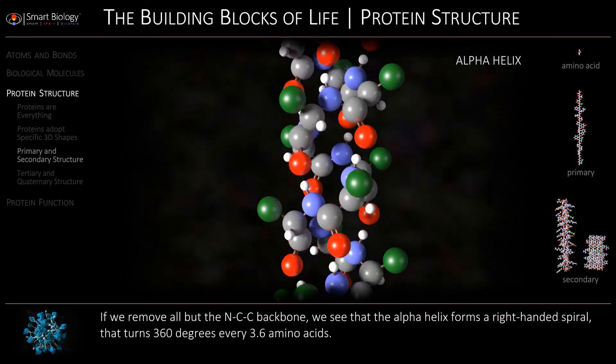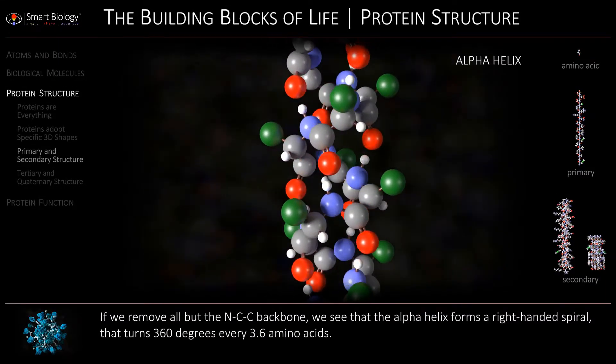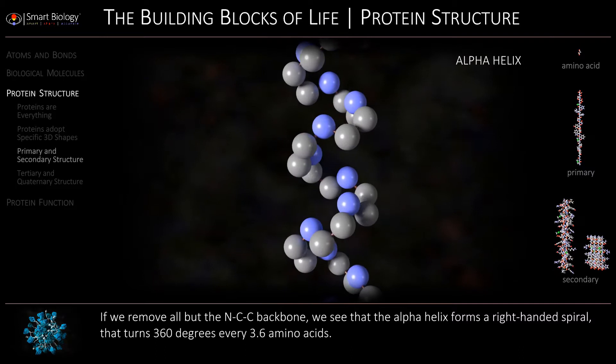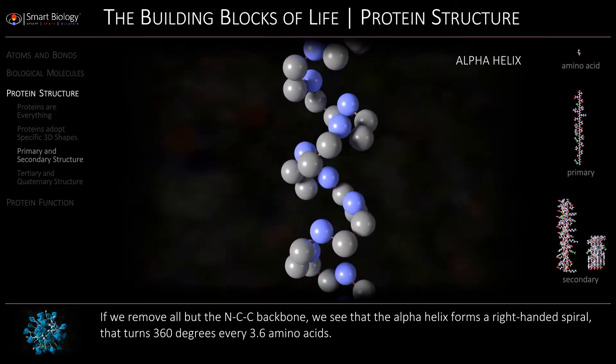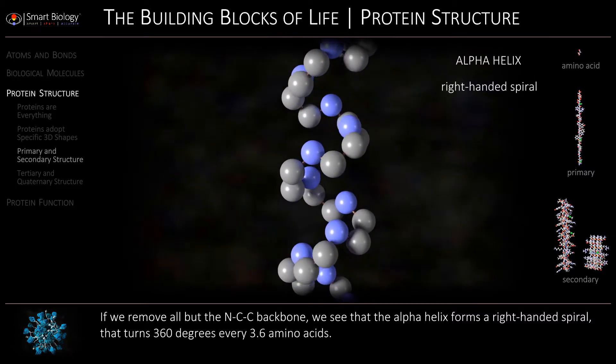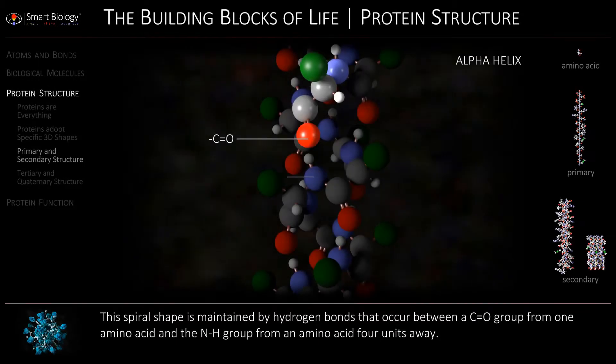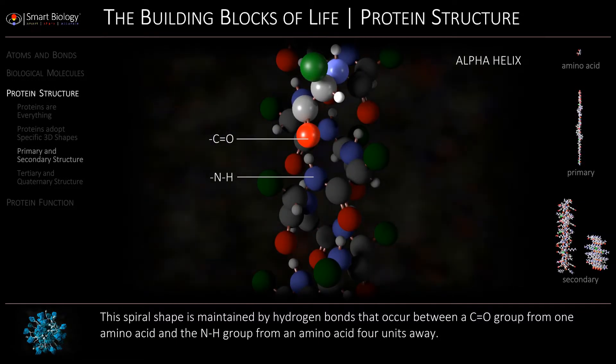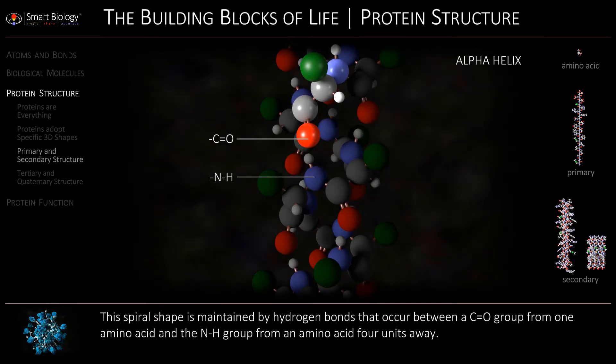If we remove all but the N-C-C backbone, we see that the alpha helix forms a right-handed spiral, that turns 360 degrees every 3.6 amino acids.